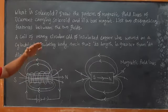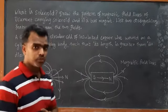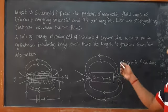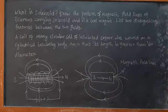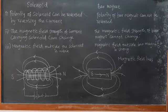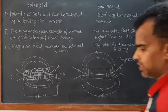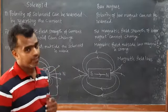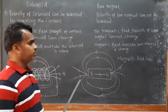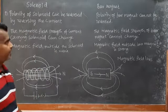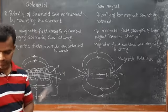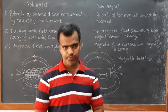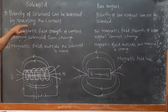Now, the two distinguishing features between the two fields. First difference: the polarity of a solenoid can be reversed by reversing the current. The north and south poles can be swapped. For example, if the current is reversed — by swapping the battery connections — the end that was north becomes south and vice versa.